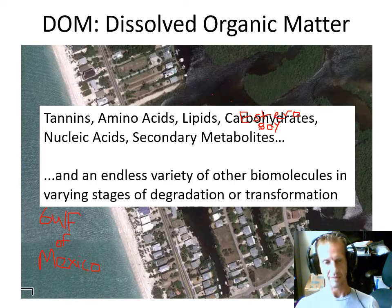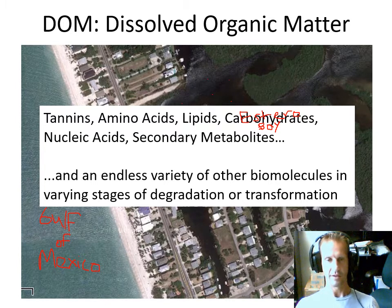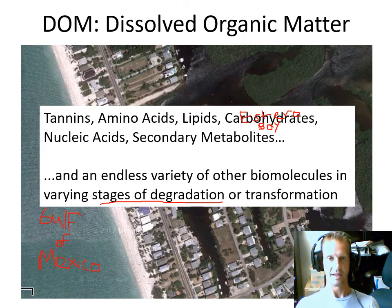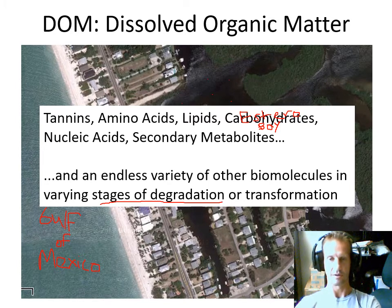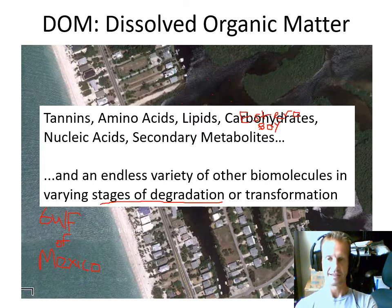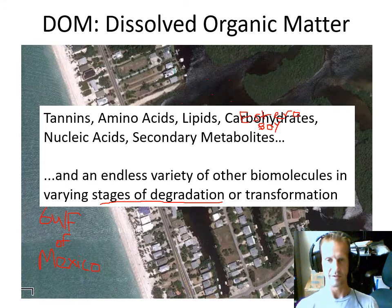Some dissolved organic molecules may be relatively intact in the same form as they were in the living cell before rupture. Others might be in some stage of degradation — a lipid that's partially decomposed, or a carbohydrate broken down into smaller carbohydrates. There's an endlessly huge variety of molecules of life that have spilled out into the environment and are floating around as dissolved organic matter.